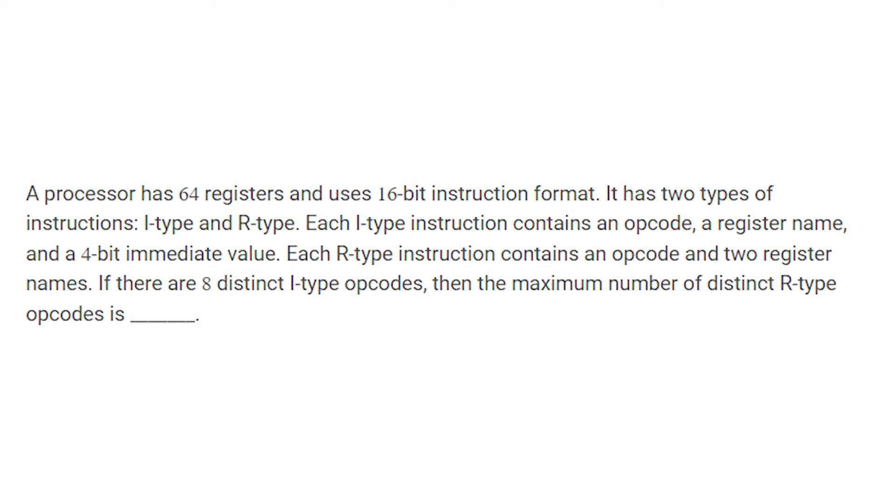It has two types of instructions, I and R. Each I type instruction contains an opcode, register name and a 4-bit immediate value. Each R type instruction contains an opcode and two register names. There are eight distinct I type opcodes, then the maximum number of distinct R type opcodes is.